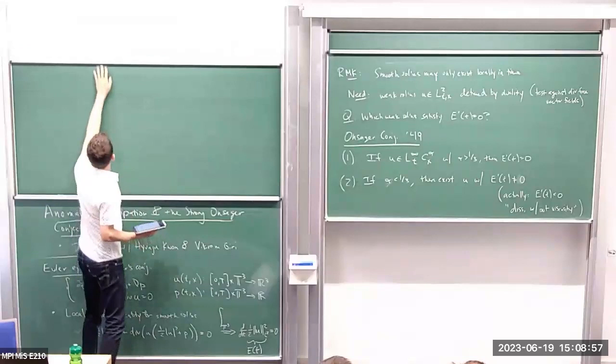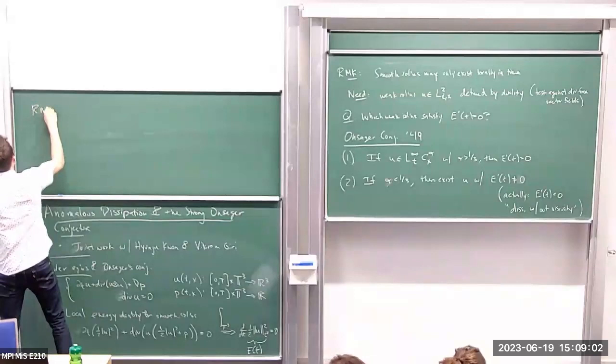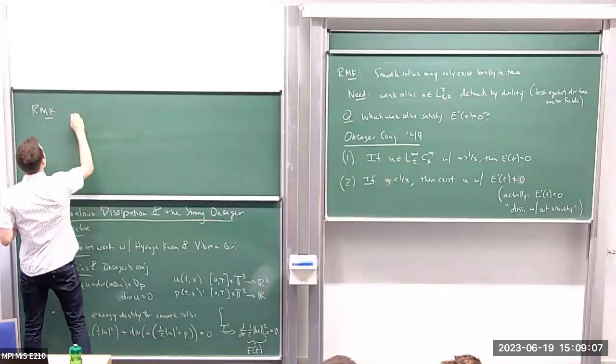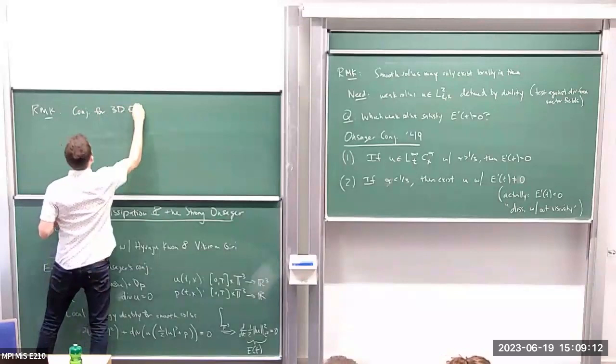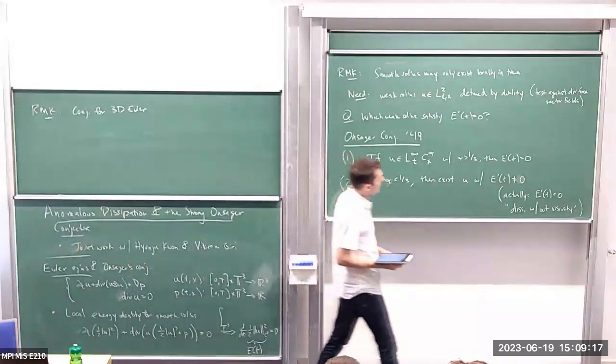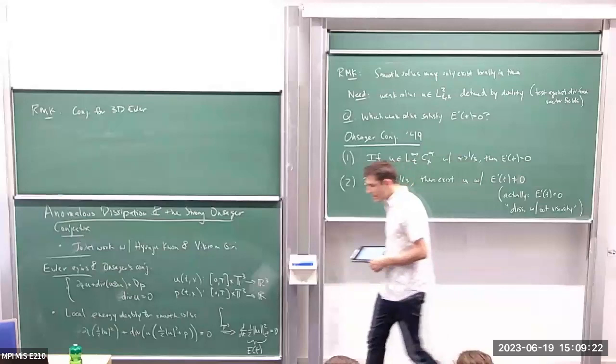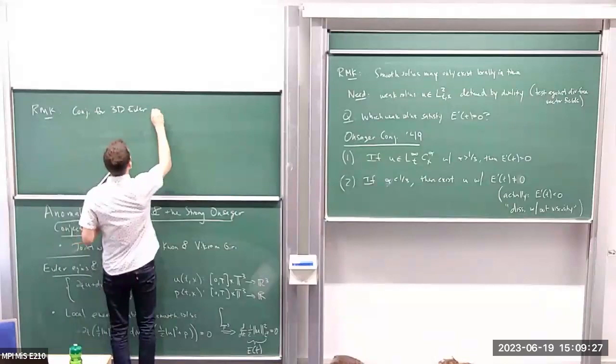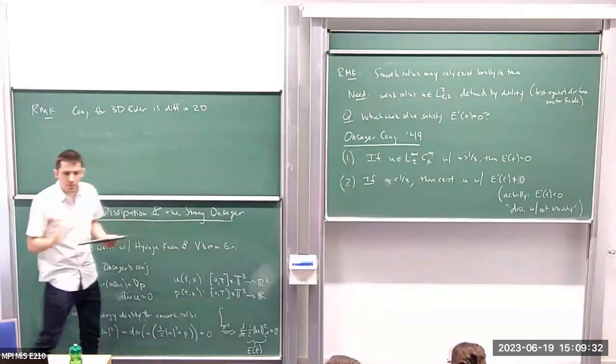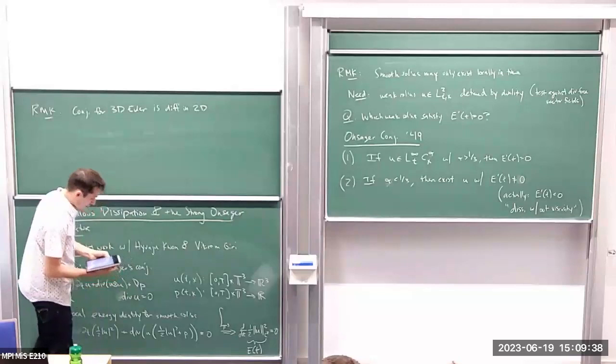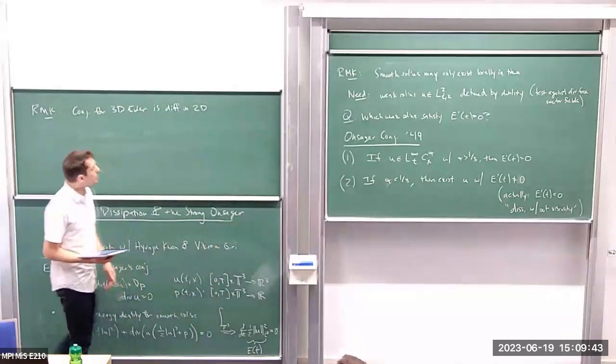I'm focusing this week on the 3D Euler equations. If I consider instead the 2D Euler equations, the expectation is actually that E'(t) equals zero — it's different from 3D Euler. So we're just going to focus on 3D Euler.